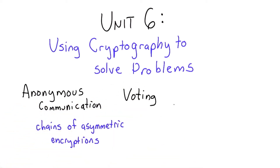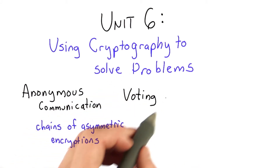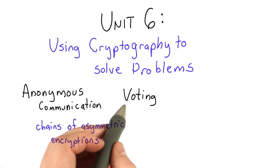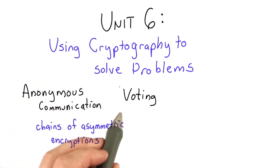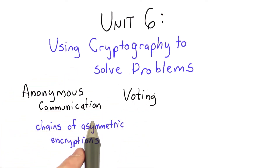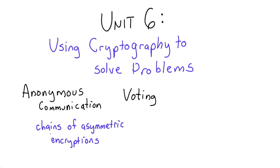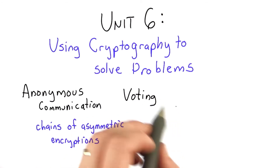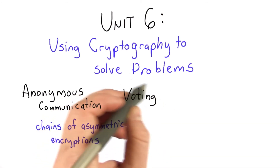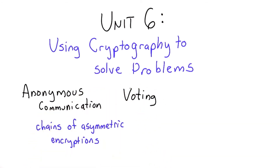Then we'll look at how to do voting. There are lots of issues with voting — we won't get into all of them — but we'll look at the issue of can you provide an accurate tally and know that each vote is counted, without revealing who voted for whom. This will also be done using a chain of asymmetric encryptions, but with some added features to ensure that the vote tally is correct.